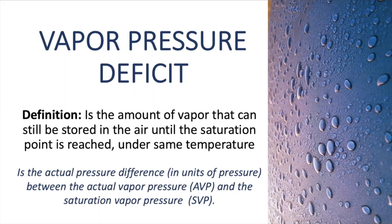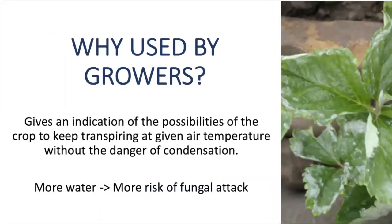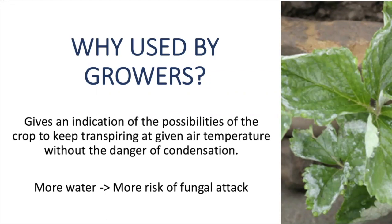And why is this useful for growers? Well, we know humidity is good for plants, right? But too high humidity can carry also problems inside our growing systems. VPD can give an indication of the possibilities of the crop to keep transpiring at a given temperature without danger of condensation. Condensation is not good for plants — the more water we have, the more risk of fungal attack we have. High humidity can also affect plant transpiration, air movement, and temperature.